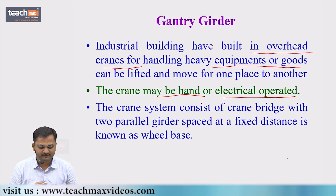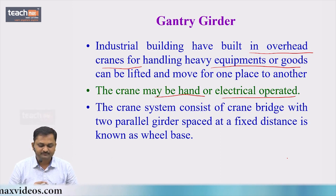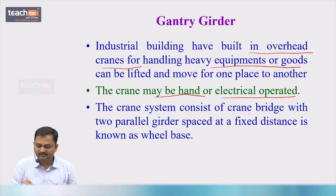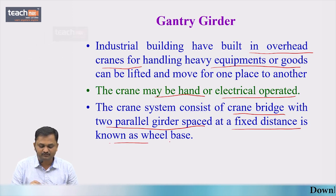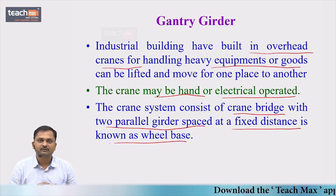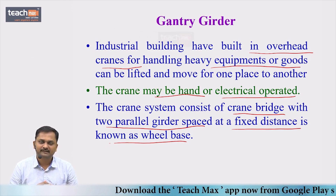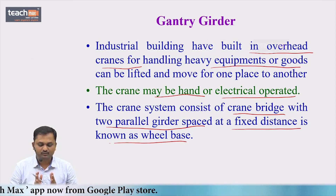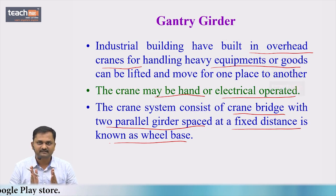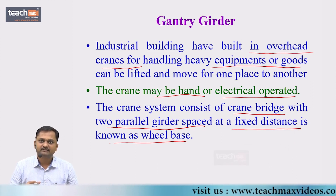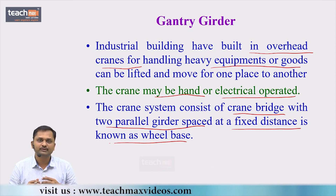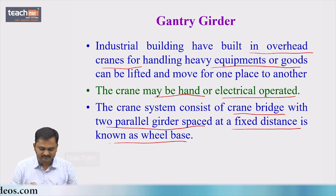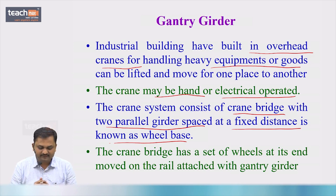The crane system consists of a crane girder with two parallel girders spaced at a fixed distance, which is known as the wheel base. The crane girder consists of two parallel girders spaced by this fixed wheel base distance. The trolley is attached to and moves over this crane girder system.